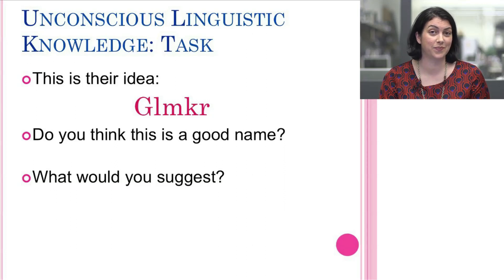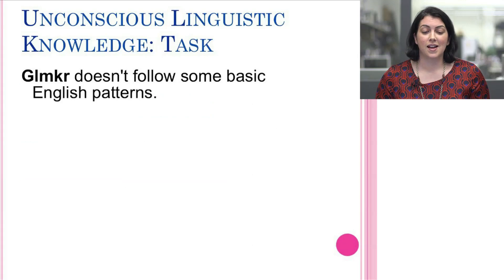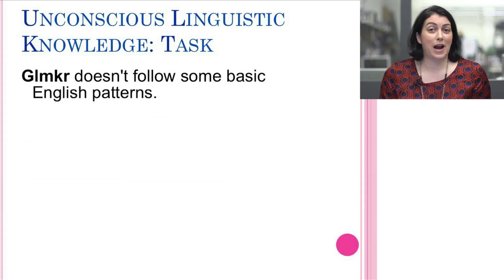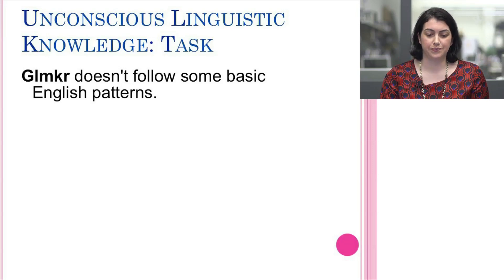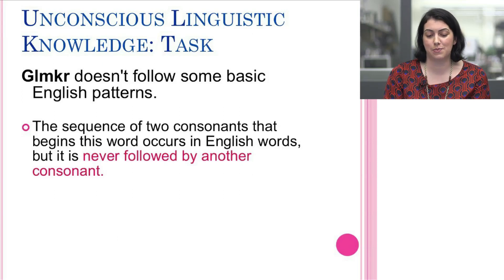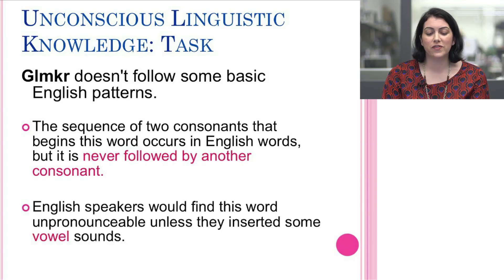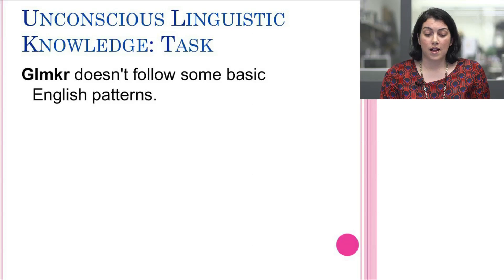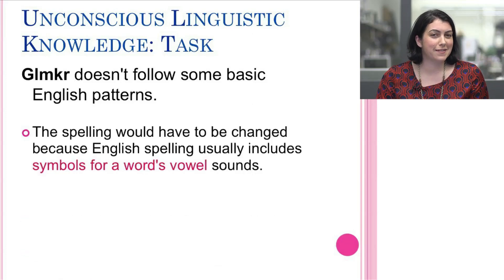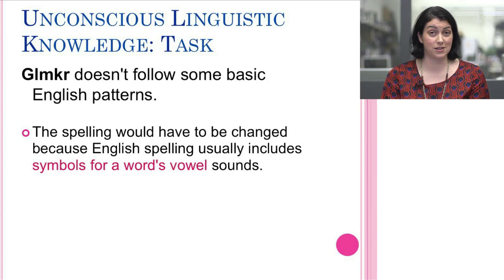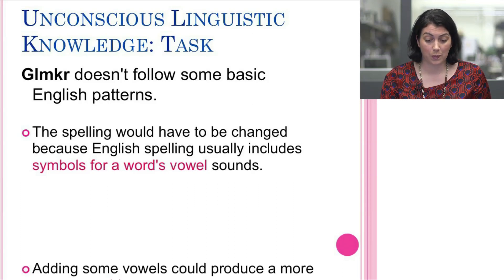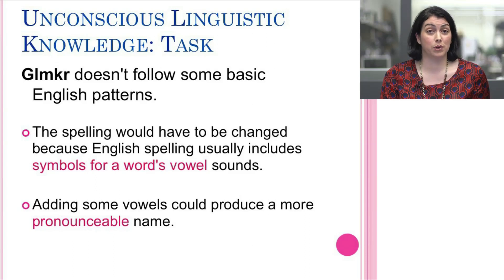What might you suggest? You may have started to think that perhaps this isn't a great name because GLMKR doesn't follow some of the basic English patterns. First of all, the sequence of two consonants that begin this word does occur in English, but it's never followed by a third consonant. And English speakers would find this very difficult to pronounce unless we inserted some vowel sounds. Also, the spelling could use some changing, since in English we usually include symbols for vowel sounds, even though not all languages do. So perhaps adding some vowels could make it more pronounceable and marketable.